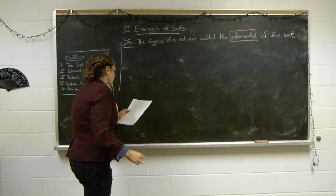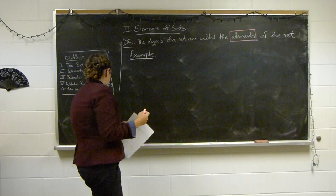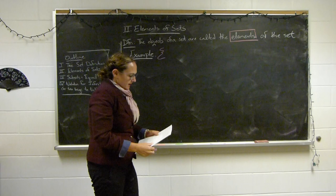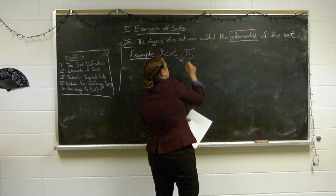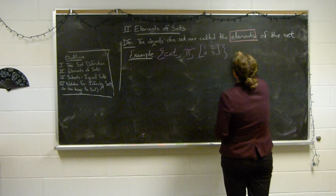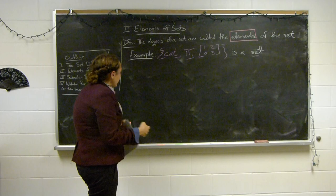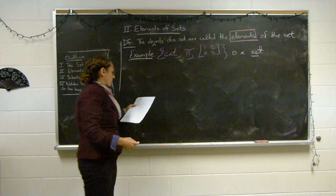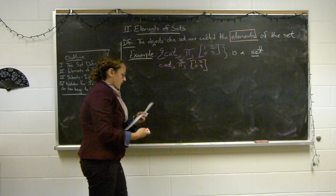Here's an example. Let's say my set is {cat, pi, [[1,2],[0,3]]} — a word, a number, and a matrix. This is a set. We put brackets around a list of things, didn't repeat anything. To find the elements, you just ignore the outermost brackets. So cat is an element, pi is an element, and the matrix [[1,2],[0,3]] is an element.